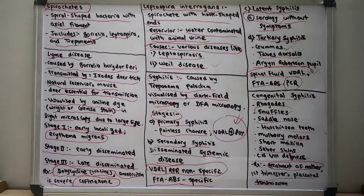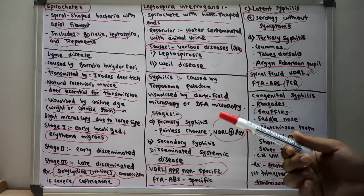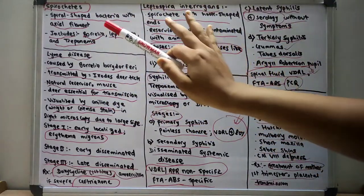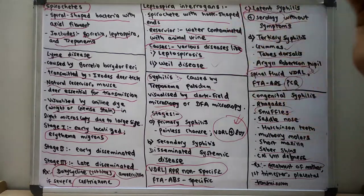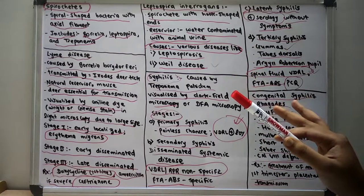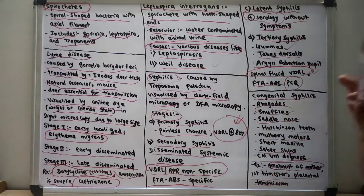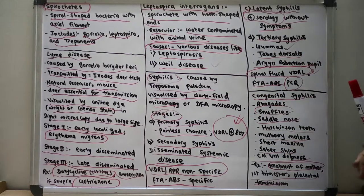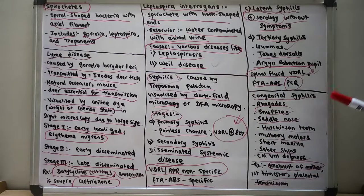In summary, today we discussed various diseases caused by spirochetes. Spirochetes include Borrelia, Leptospira and Treponema. Borrelia causes Lyme disease with three stages. Leptospira causes leptospirosis and Weil's disease. Treponema pallidum causes syphilis with three main stages — primary, secondary and tertiary — with latent syphilis between secondary and tertiary. Congenital syphilis involves transplacental transmission in the first trimester, and the pregnant mother should be treated as early as possible.